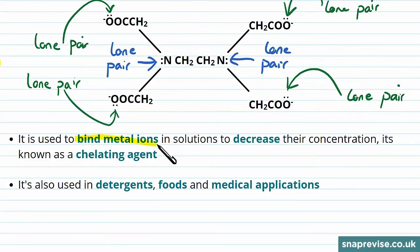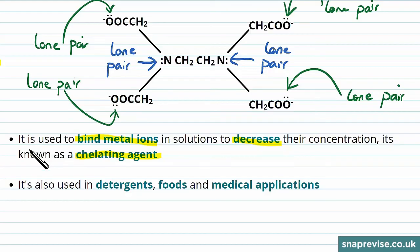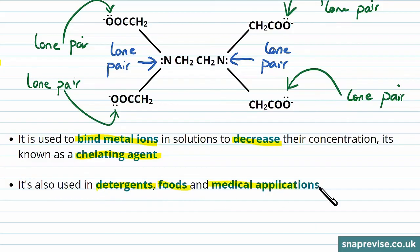EDTA is useful to bind metal ions in solution, which decreases their concentration. It's known as a chelating agent. More uses of EDTA are in detergents used for washing and cleaning, foods, and medical applications.